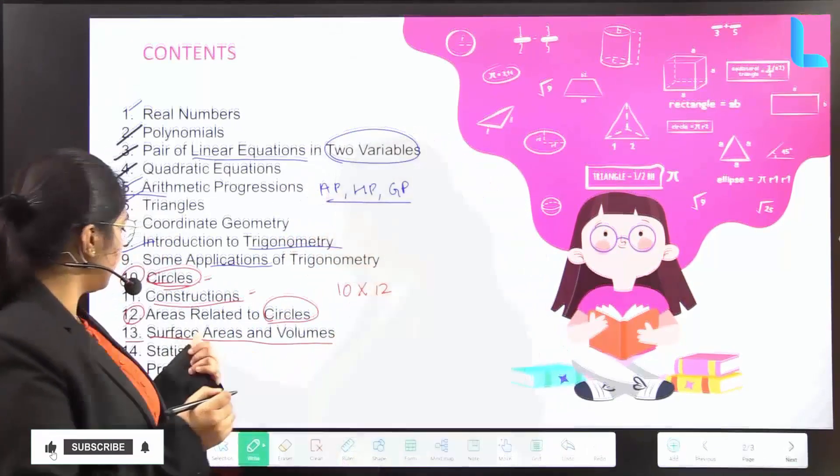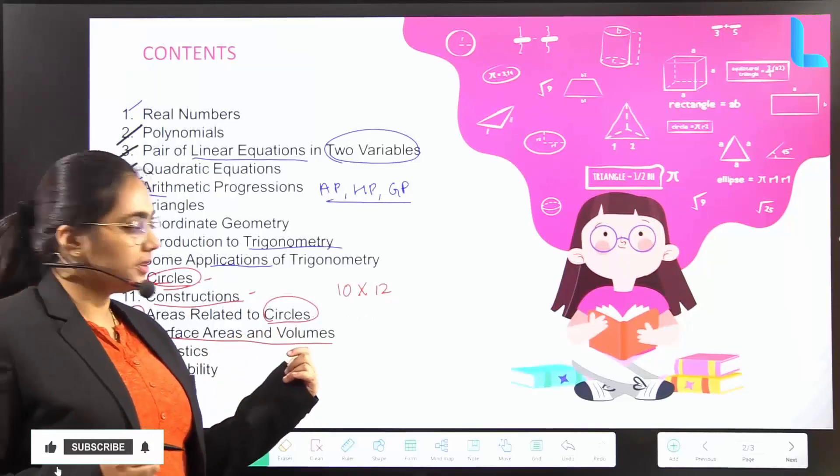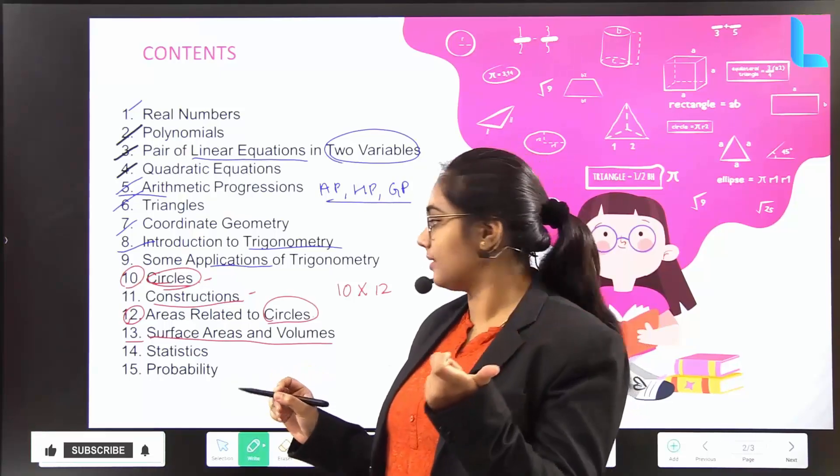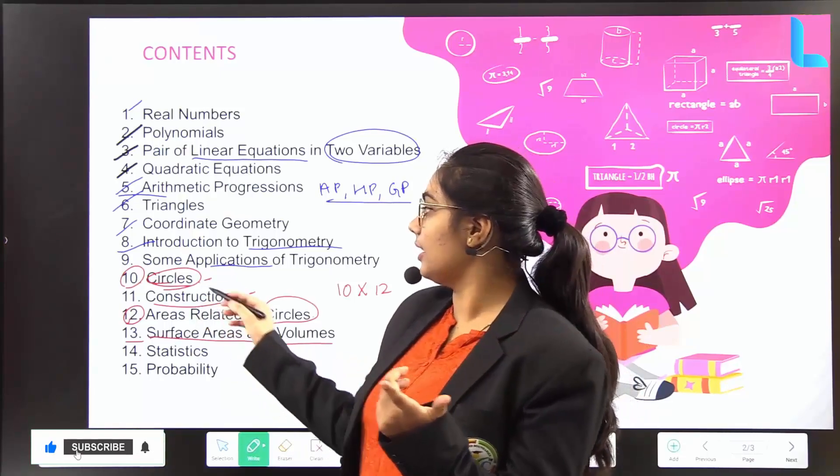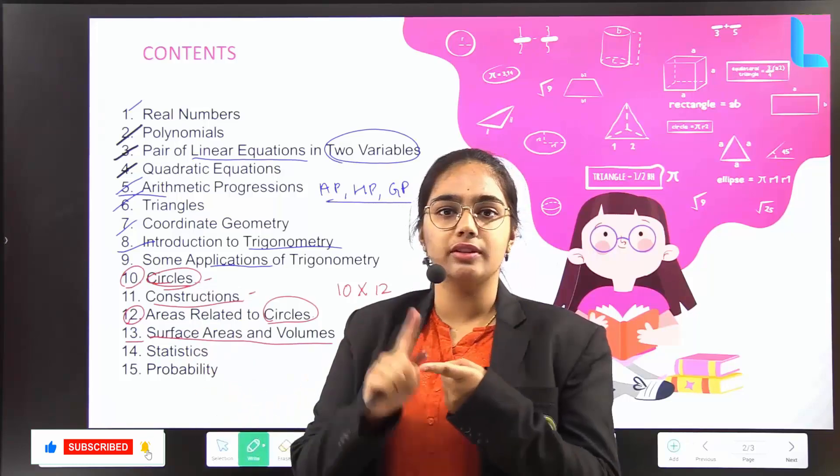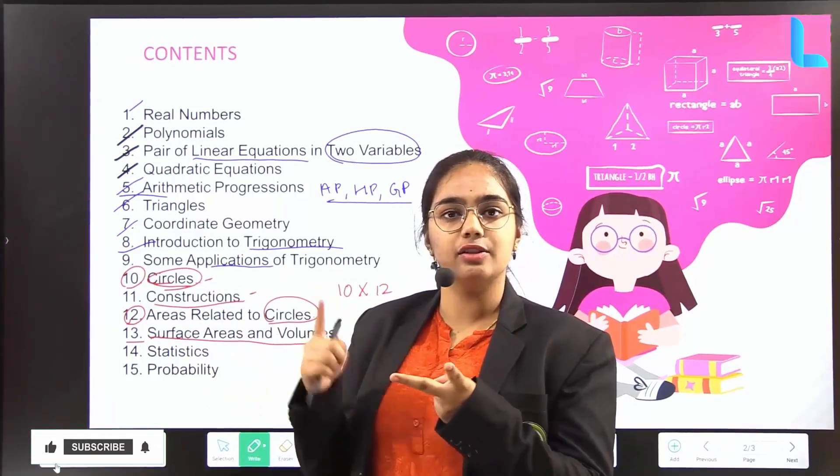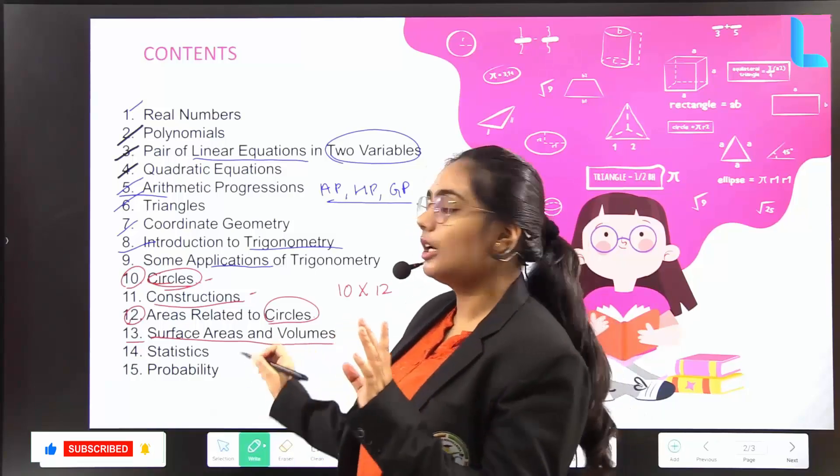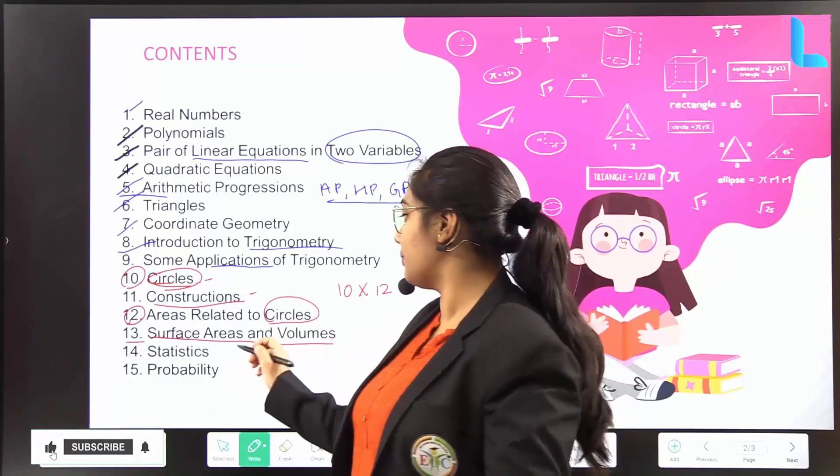Then surface areas and volumes. In areas and volumes, just the length and breadth, you have to know the differences. Rest all, it depends on which shape you are going to choose. For circles, you have different formulas. Triangles, you have different formulas. Rectangles, you have different formulas. If you know the formulas, then you are a pro in this chapter.